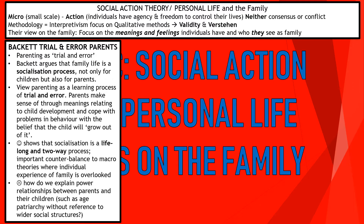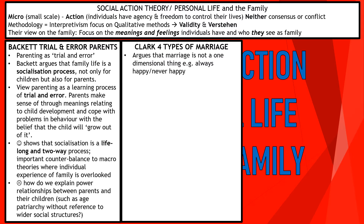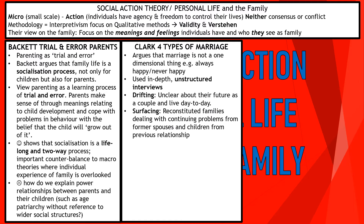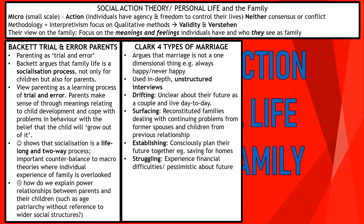Clark talked about the four types of marriage, arguing that marriage is not a one-dimensional thing — you're not simply happy or unhappy. He used unstructured interviews to gather data. The four types were: drifting, where couples are unclear about the future and live day to day; surfacing, which looks at reconstituted families dealing with problems like former spouses and children having conflict with new partners; establishing, where couples plan their future together and save for homes; and struggling, where couples experience financial difficulties and are very pessimistic about the future.